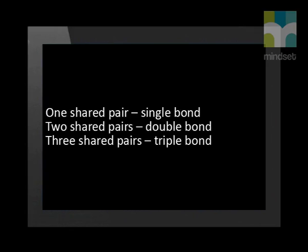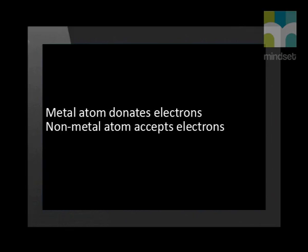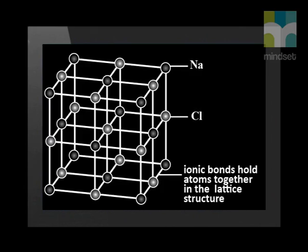Covalent bonds form small molecules with a fixed number of atoms. Ionic bonding is the transfer of electrons between metal and non-metal atoms: the metal atom donates electrons and forms a positive ion called a cation, while a non-metal atom accepts electrons and forms a negative ion called an anion. These cations and anions combine in a crystal lattice, with strong electrostatic forces of attraction between the alternating positive and negative ions. The crystal lattice has a fixed number of atoms, but the proportion of metal to non-metal atoms remains the same. Both covalent and ionic bonds are stronger than metallic bonds.